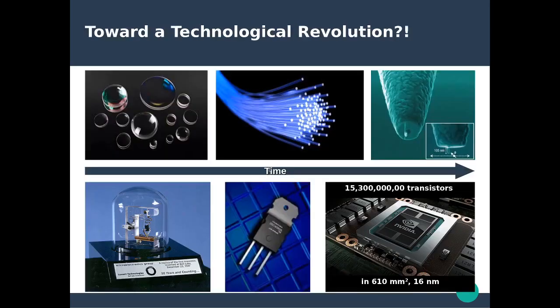Finally, there is a parallel between nanophotonics and electronics. Just as electronics evolved from large table-sized transistors all the way to miniaturized CPUs containing billions of transistors, optics has seen a similar trend — going from bulk optical lenses to optical fibers down to nanoscale optical antennas. There is definitely a technological revolution ongoing in the field of optics.